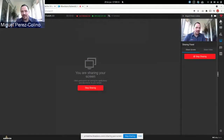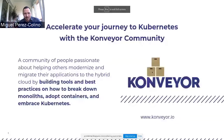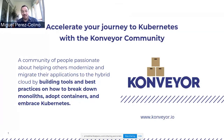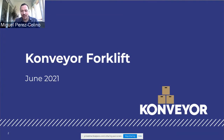Conveyor is the community of people passionate about helping others modernize and migrate applications to the hybrid cloud, building tools and best practices on how to break down monoliths, adopt containers, and embrace Kubernetes. We are part of this community, and Forklift is the tool that migrates virtual machines to KubeVirt. KubeVirt is an extension to Kubernetes that was started in 2017 and already has more than 2,000 stars on GitHub, so it has a lot of traction.